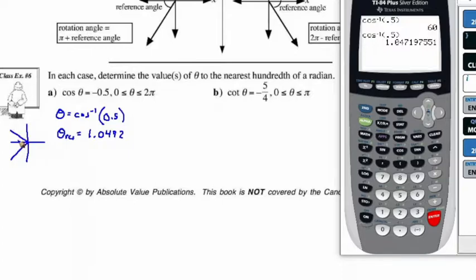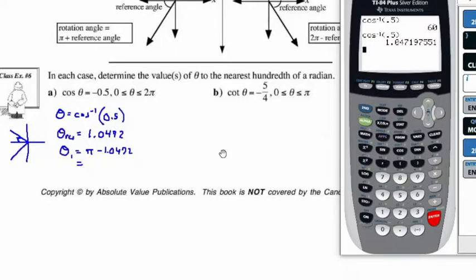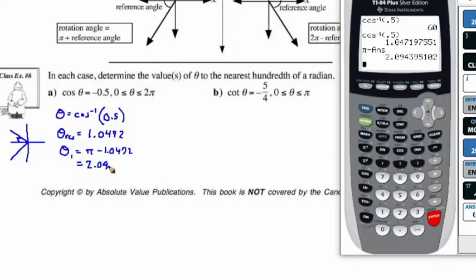So that means in quadrant 2, we're going to have pi minus that value as the rotational angle. So the first theta is going to be equal to pi minus 1.0472. Let's calculate: pi minus our answer gives us 2.0944. To the nearest hundredth of a radian, this is equal to 2.09.